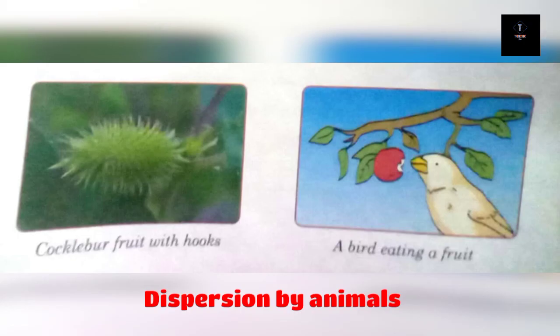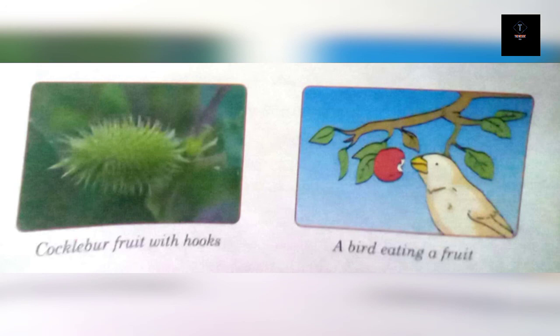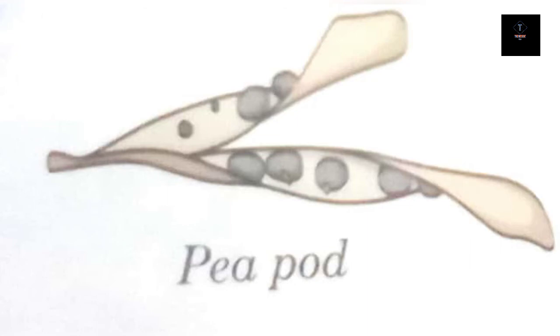For dispersion by animals, some seeds have hooks or spikes which stick to the body of animals and get carried away. The fruits of cocklebur have hooked tips that stick to animal fur and get deposited at a distance. Many fruits are tasty to eat; human beings and animals eat the fleshy parts of these fruits and throw away the seeds on the ground, dispersing them.